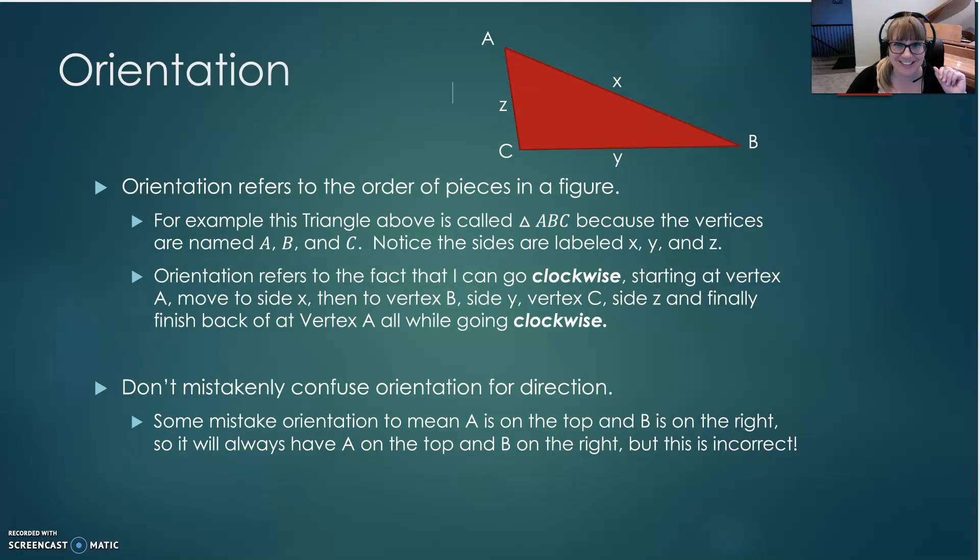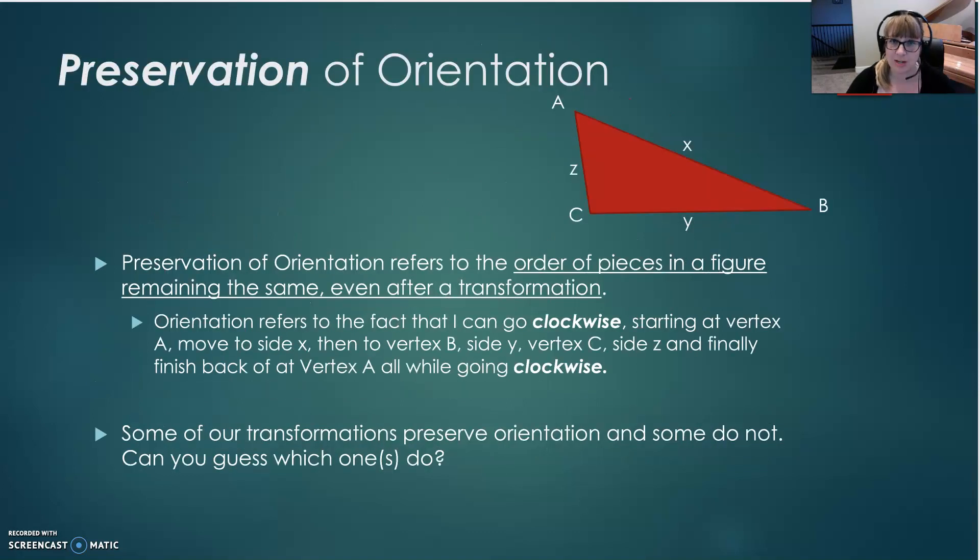Now that we've talked about orientation, let's talk about preservation of orientation. In preservation of orientation, we're talking about how the order of the pieces in a figure doesn't change, even after a transformation. So here we go A to X to B to Y to C to Z back to A. When I do a transformation, if preservation of orientation has occurred, or in other words, if the orientation is preserved, then I'm still going to be able to go A to X to B to Y to C to Z and back to A.